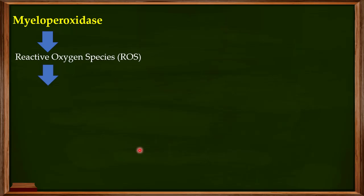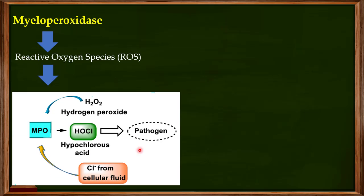How are these reactive oxygen species produced? Myeloperoxidase uses hydrogen peroxide and takes chloride from the cellular fluid. When myeloperoxidase acts on hydrogen peroxide and chloride, it produces hypochlorous acid. This hypochlorous acid then acts on the pathogen to kill or degrade it, thereby protecting the body from infection.